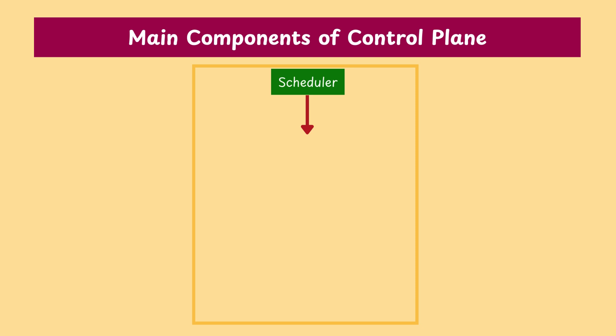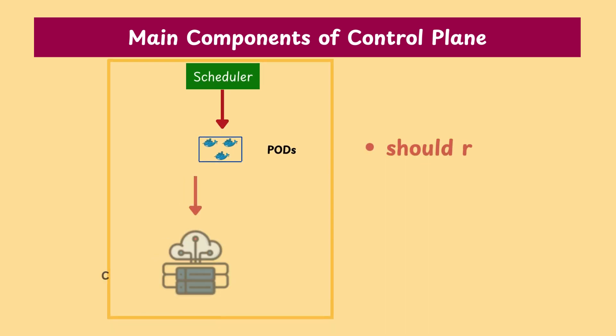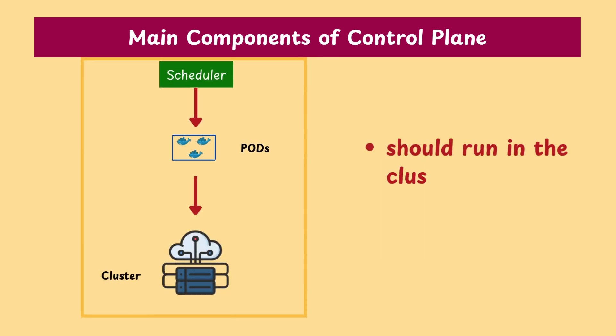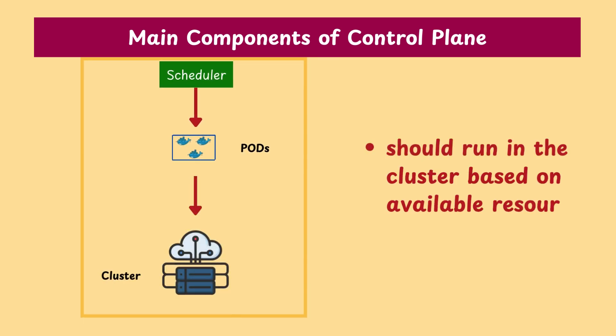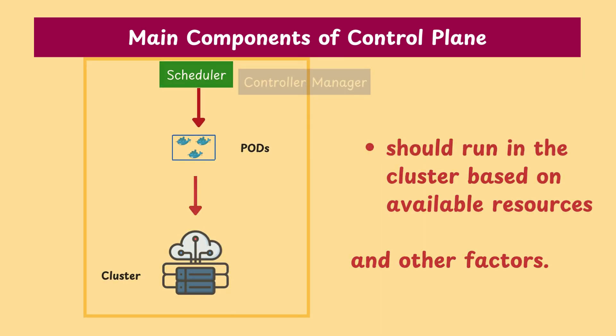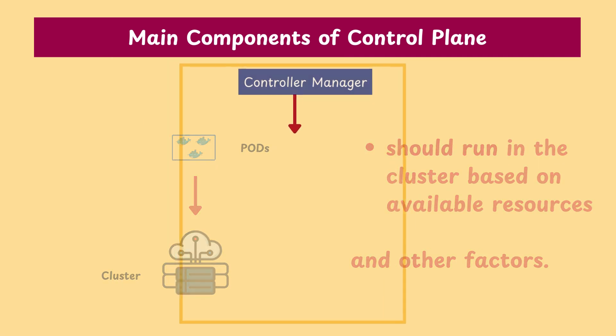Scheduler — this decides where pods, the smallest unit of work, should run in the cluster, based on available resources and other factors.